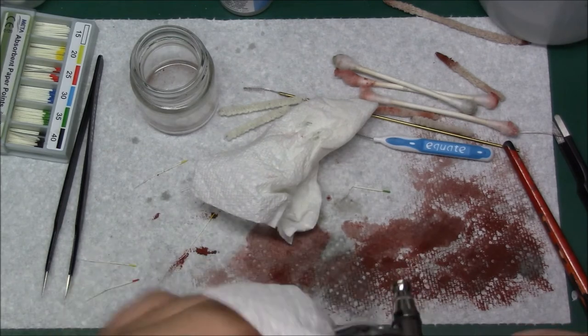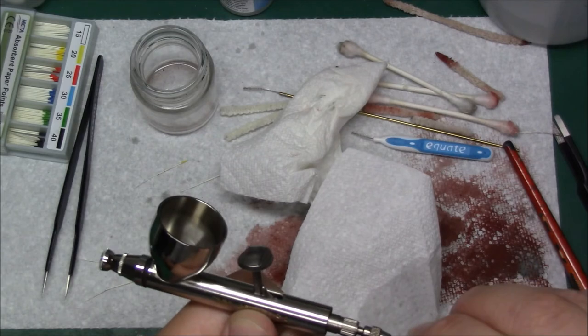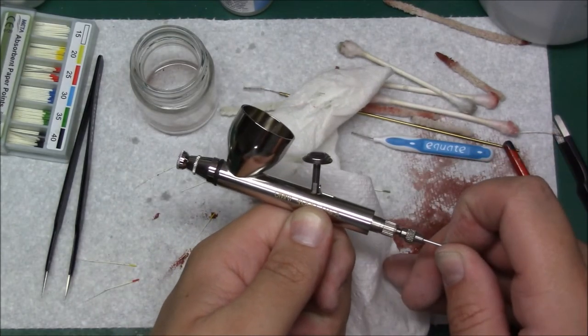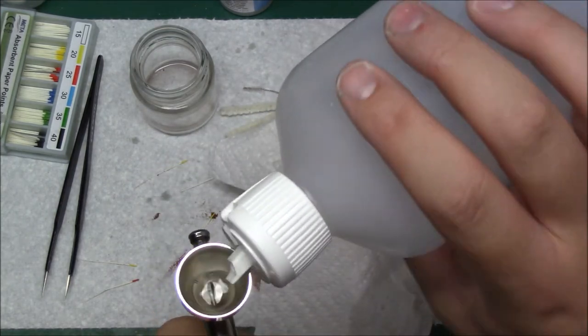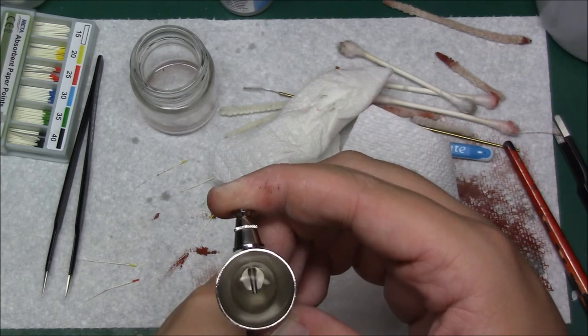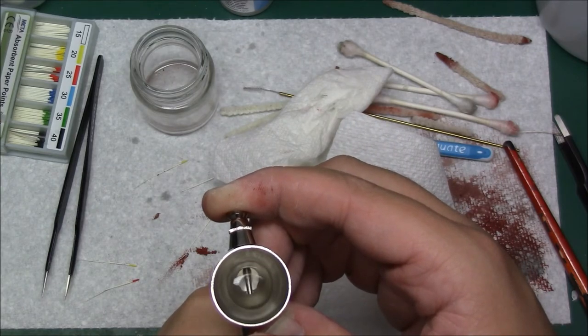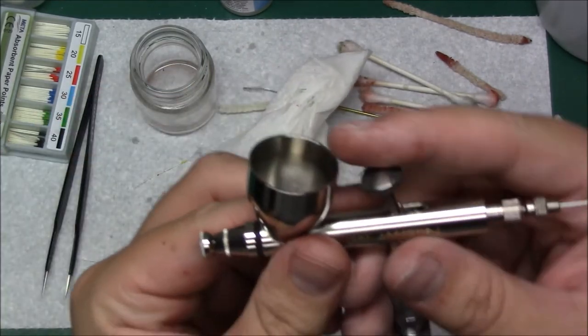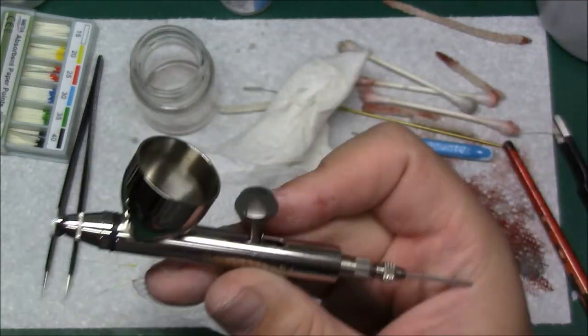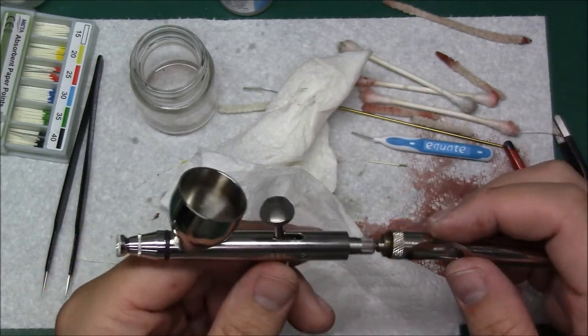Like normal, I'll take some lacquer thinner and blow it through. Back flush it one more time just to check. Okay, the airbrush is clean. Make sure it's seated. There we go, no bubbles. Again, dump it, spray it out. This airbrush, like the Mr. Hobby, is perfectly clean.